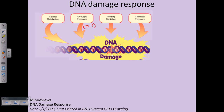Sometimes DNA damage involves breaking down of the DNA, and sometimes it is a simple mutation. In both cases, any alteration of a specific DNA structure and sequence can ultimately lead to DNA damage. Replication errors can also occur, and those errors ultimately produce DNA damage during future replication processes. These are all the causes of DNA damage.